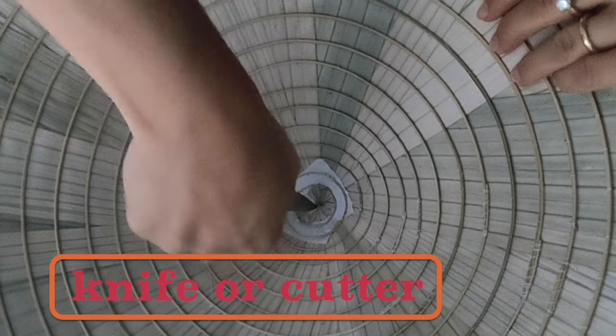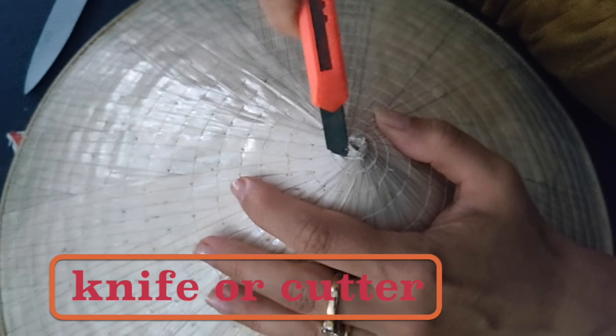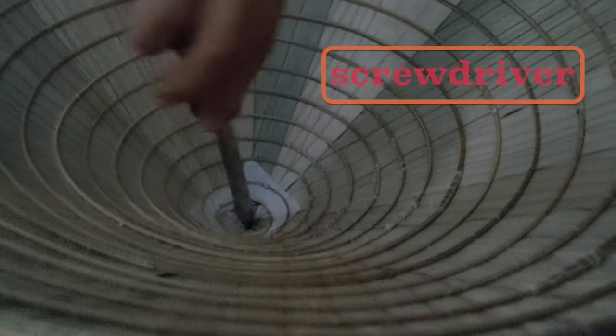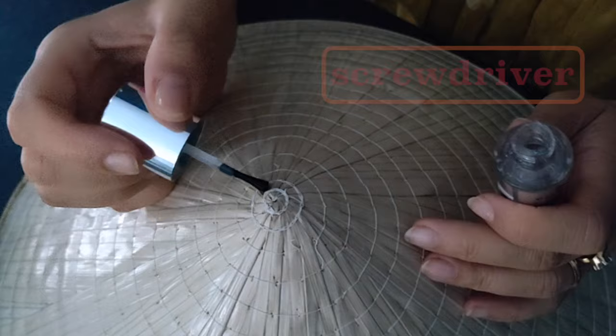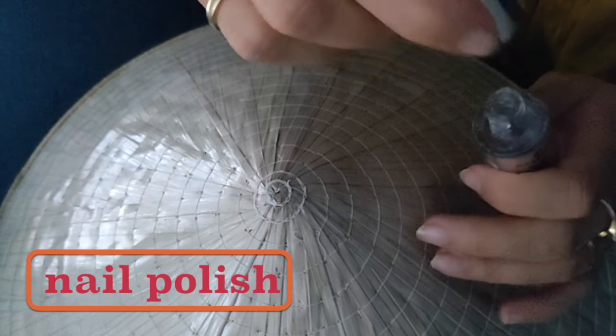To make a hole in the hat, we need a knife or a cutter, ideally both. To make the hole then bigger, I used a screwdriver with a conical ending and for stabilization nail polish.